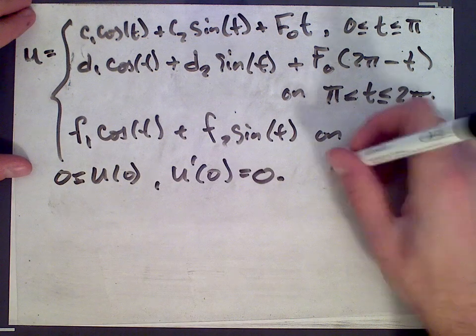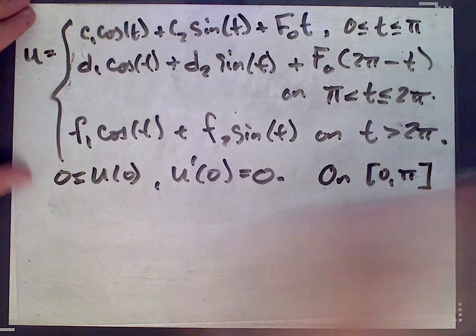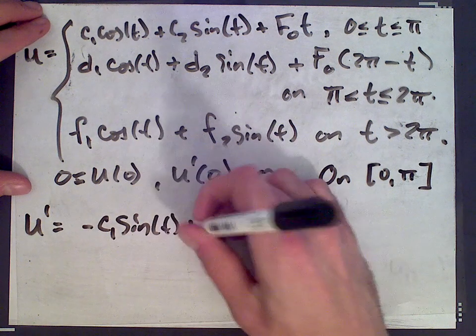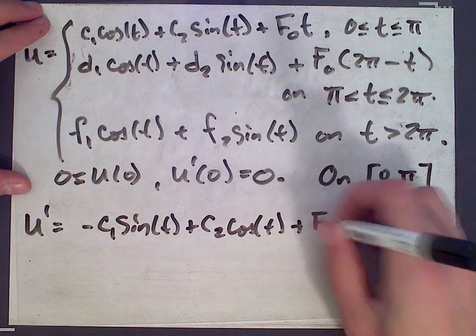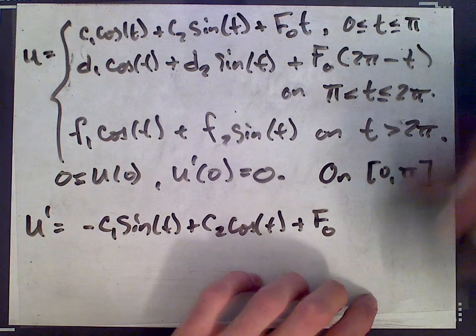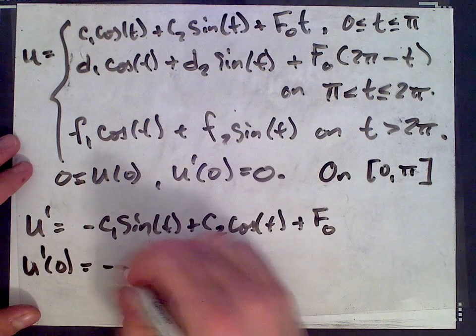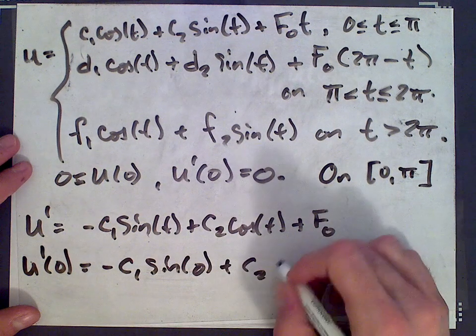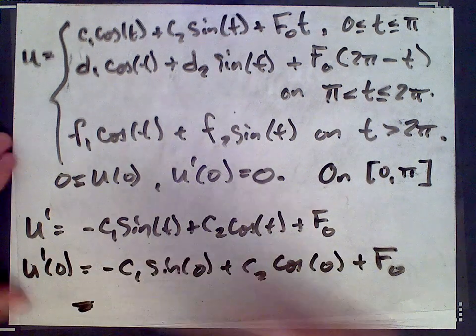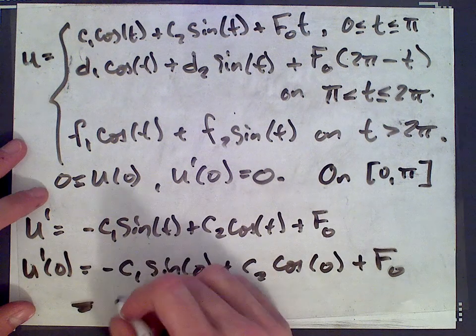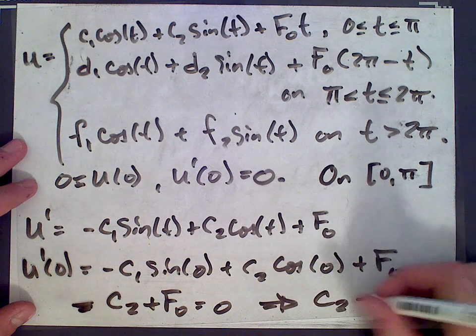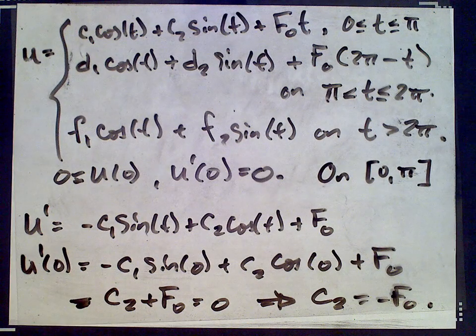So again, on the interval from 0 to π, we get that u' is negative c1 sin(t) plus c2 cos(t) plus f0, and we're told that this is 0 at 0. Let me plug 0 in. u'(0) is negative c1 sin(0) plus c2 cos(0) plus f0. So sin(0) is 0, cos(0) is 1. We get c2 plus f0 is 0, implying c2 is negative f0.